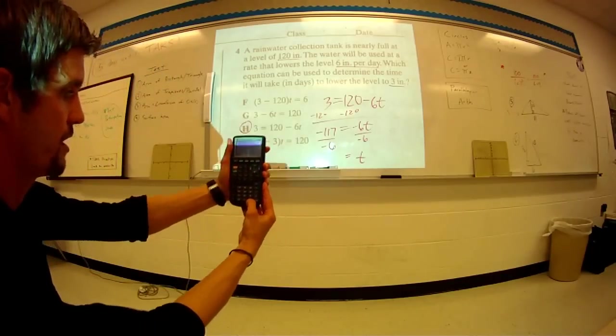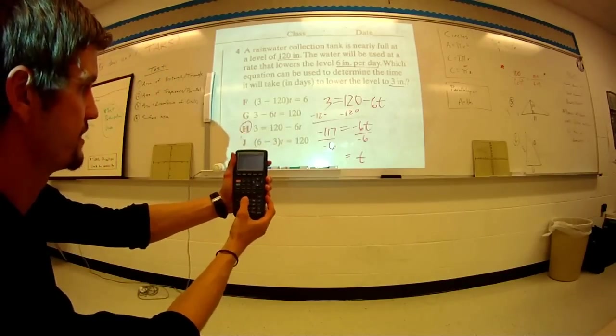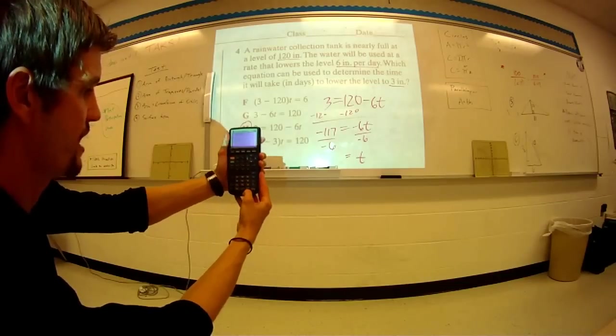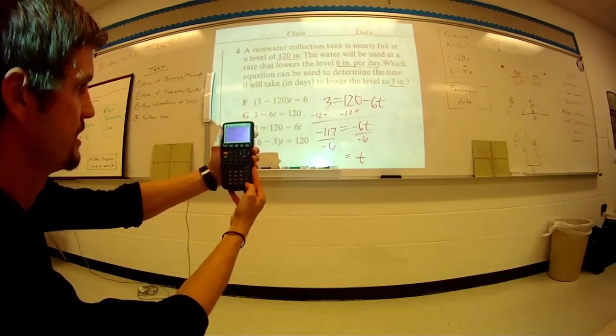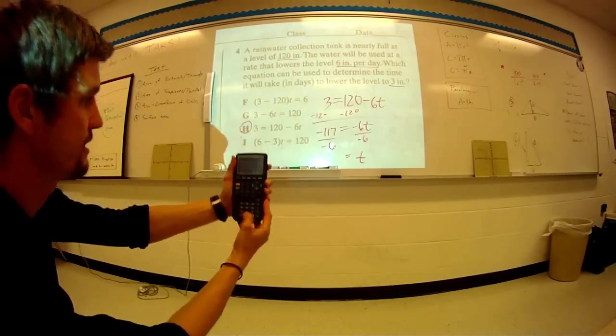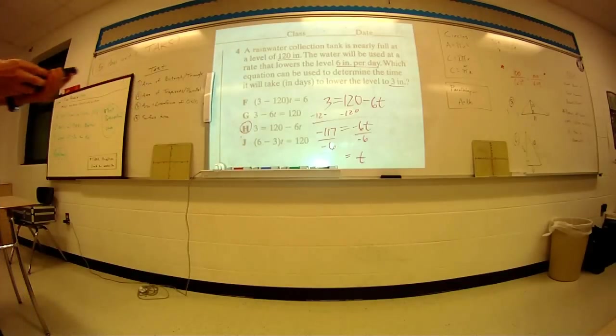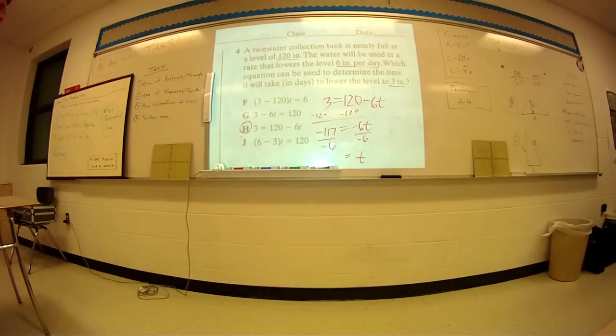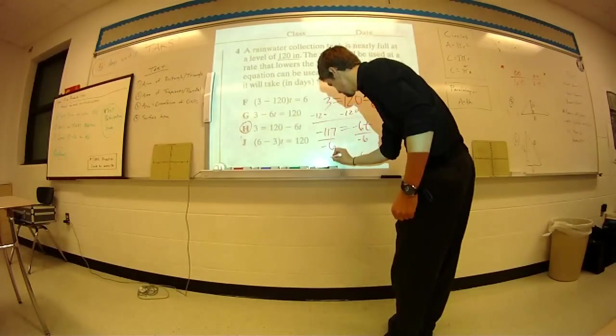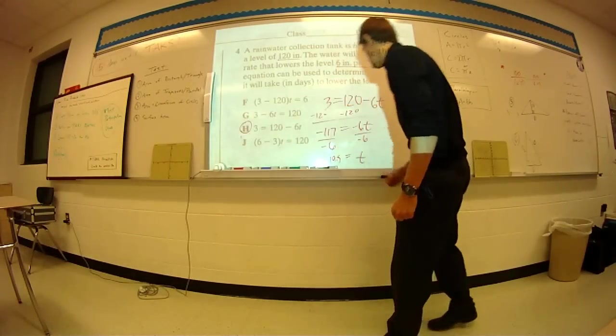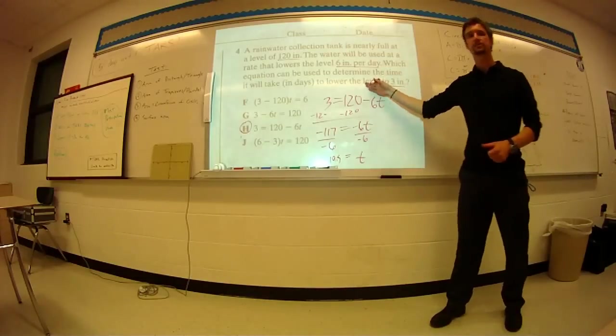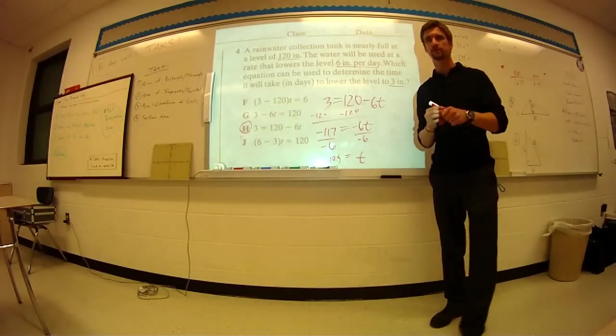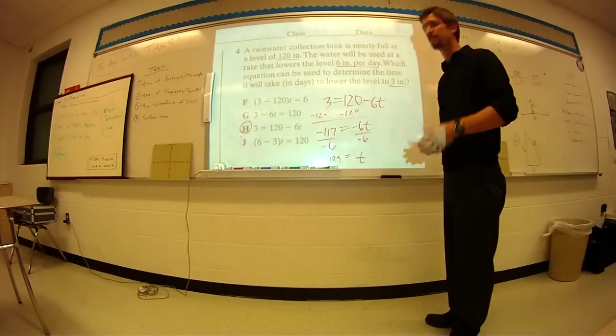So I'm going to do it here. I'm going to do negative 117 divided by a negative 6, and I get 19 and a half, which means it's going to take 19.5 days in order for the water to reach 3 inches. So 19.5. If you're interested in solving for T, it doesn't ask you to, but I'm just doing some extra work to give you some extra practice. Now let's look at number 5.